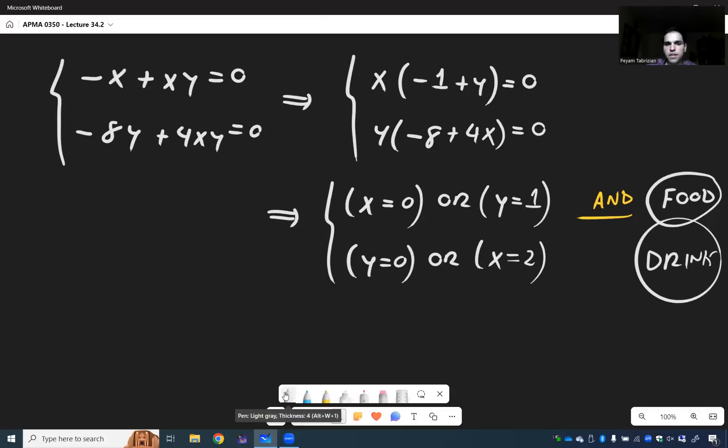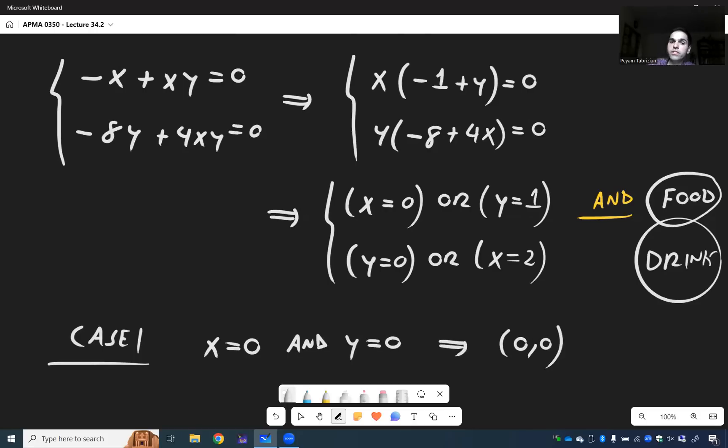So case 1, as I said, there are four choices here. One is x equals 0 and y equals 0. Again, food 1 and drink 1. That would give you the point 0, 0.